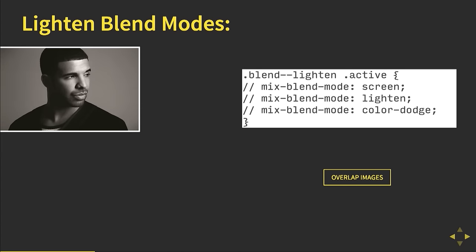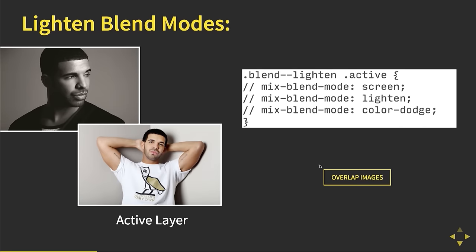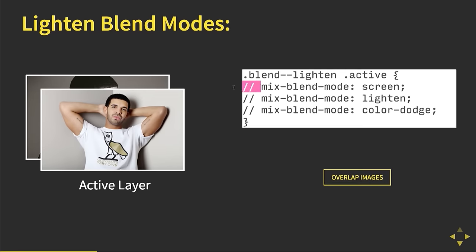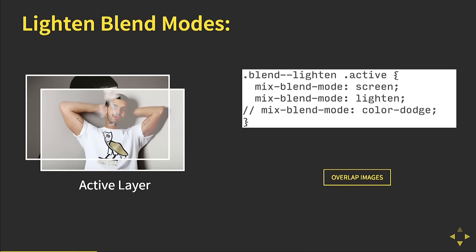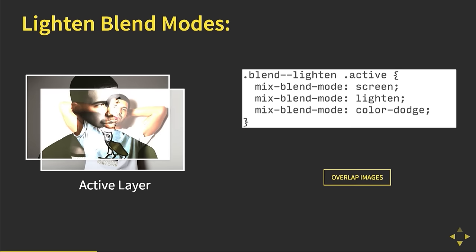Now let's talk about the lighten blend modes. Using Drake — and what's better than one Drake is two Drakes — if we overlap and screen them, screening is sort of the absolute opposite of multiplying: instead of luminosity A times B, we're doing A inverted times B inverted, inverted again. Lighten is similar to darken but the opposite — you take the lightest color of each RGB channel and keep that value, creating new tones. Color dodge uses a different algorithm, giving a really contrasted effect: it's the background layer's luminosity divided by the inverse of the active layer's luminosity.